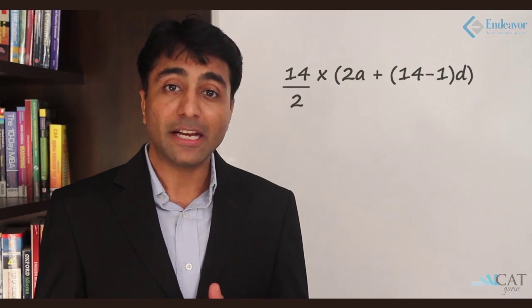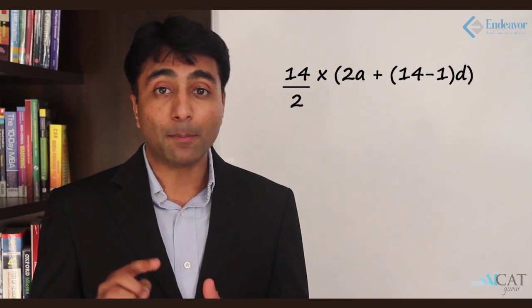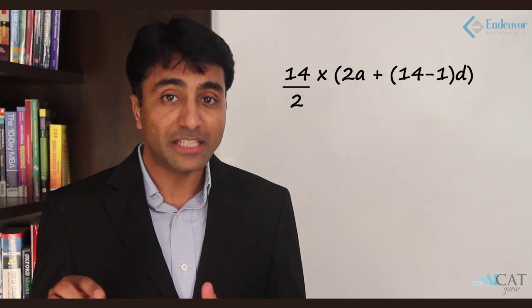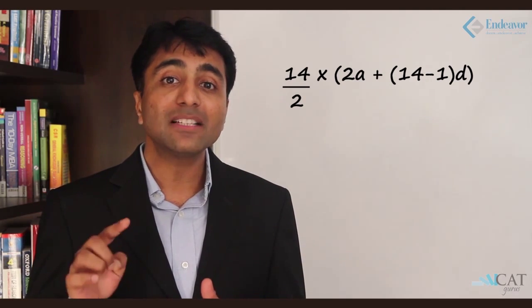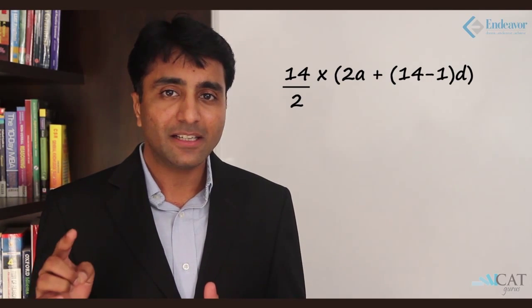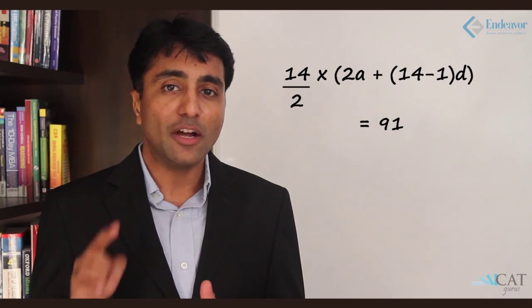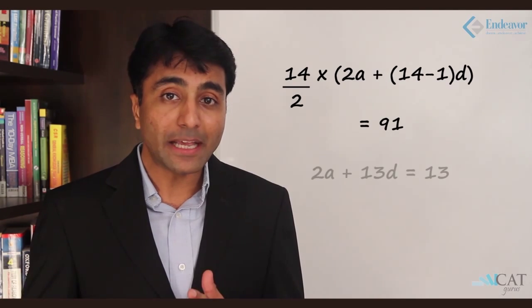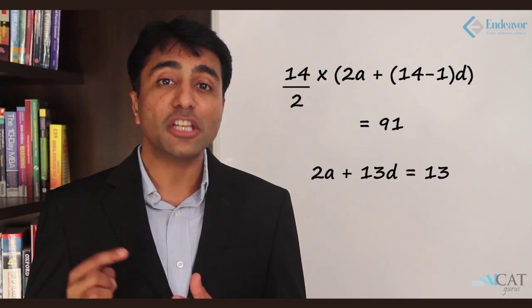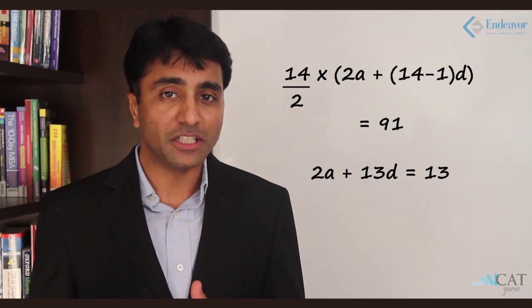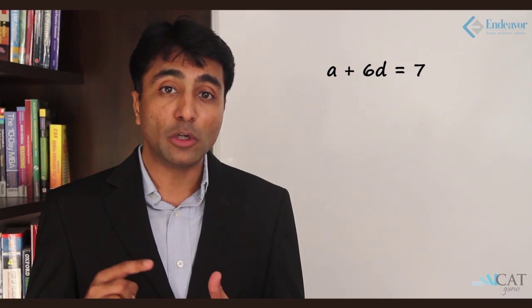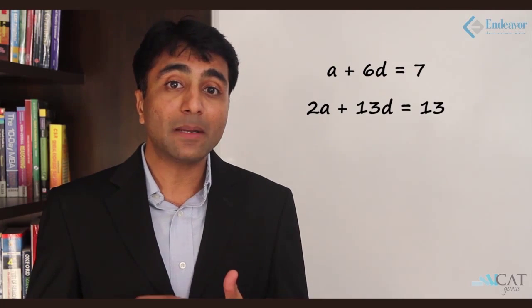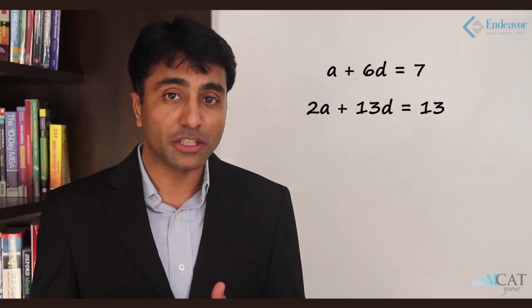So (14/2) = 7 multiplied by (2a plus n minus 1 times d), that is 7 times (2a plus 13d) equals 91. Cancelling 7 from both sides gives 2a plus 13d equals 13. So we have two equations: a plus 6d equals 7, and 2a plus 13d equals 13.